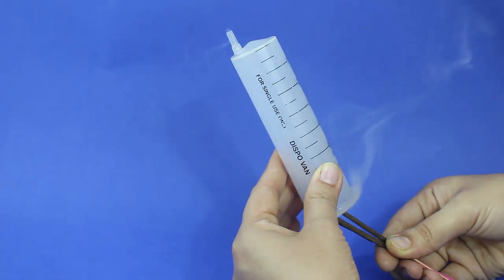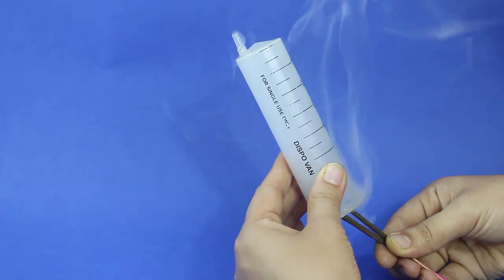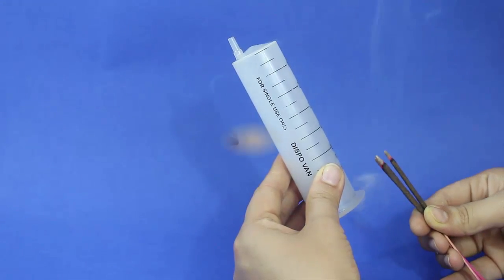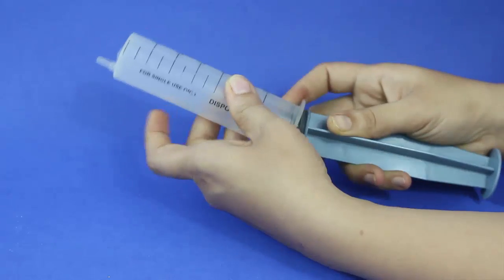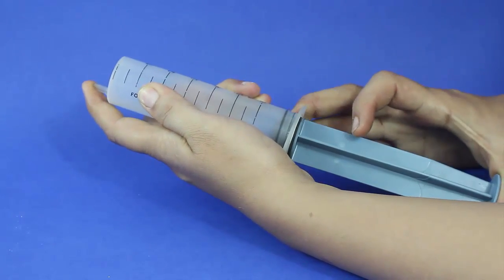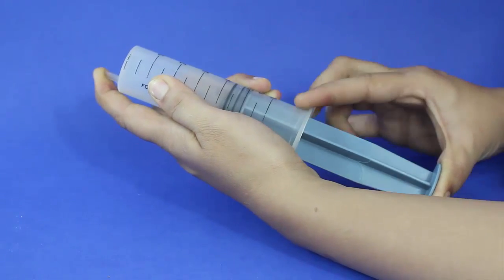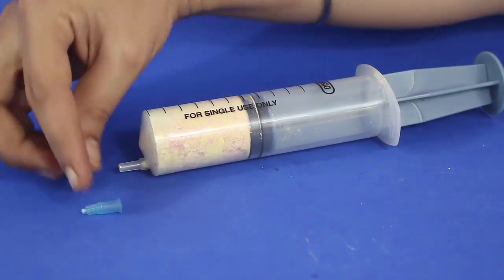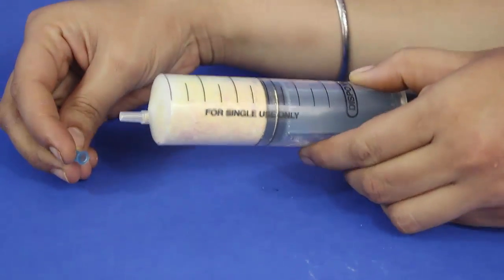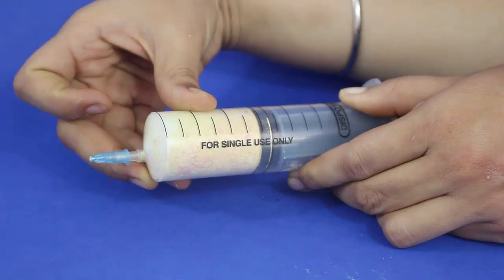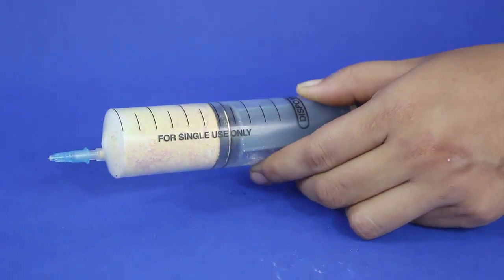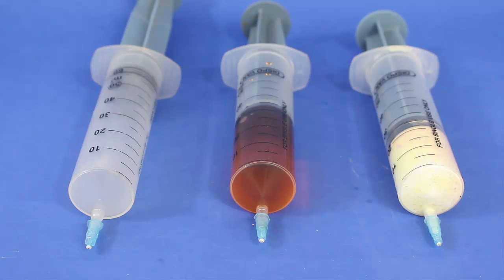Now we will do it for the gas using the smoke of the incense stick. Put the piston and cover the mouth of the syringe with the tip of your finger. We will start using the stoppers to close the mouth of every syringe. We can see for the solids, liquid, and gas, we have provided a stopper.